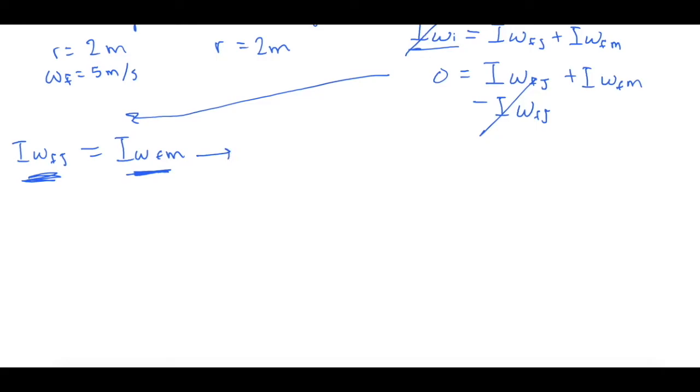So what are we going to use for Joey? I for Joey, he's a point mass in this case. So we will use mr squared times his omega final of Joey. That's bad F. Okay, and that's going to equal the I of the merry-go-round is a disc spinning, so we'll have 1/2 mr squared times its final omega. And this is what we're solving for. So if we divide both sides of the equation by the moment of inertia of the merry-go-round, then we will end up with omega of the merry-go-round, which is what we're looking for. Okay, so these cancel and we're good.